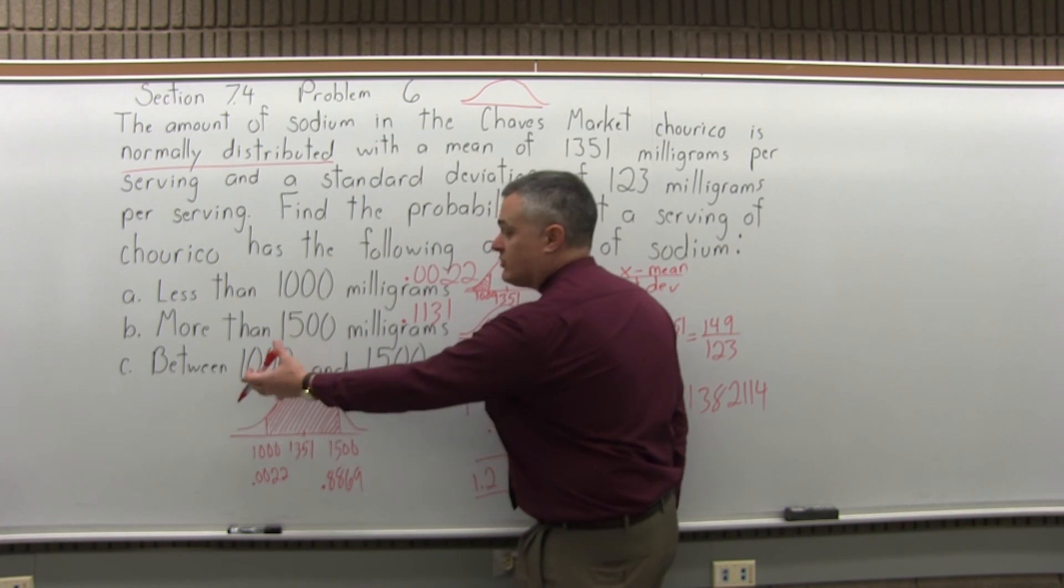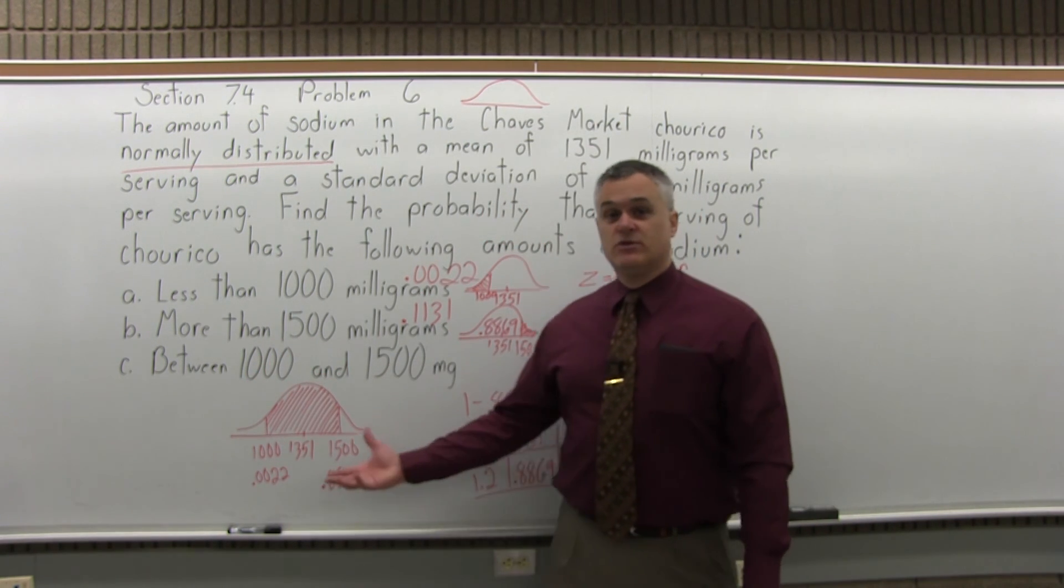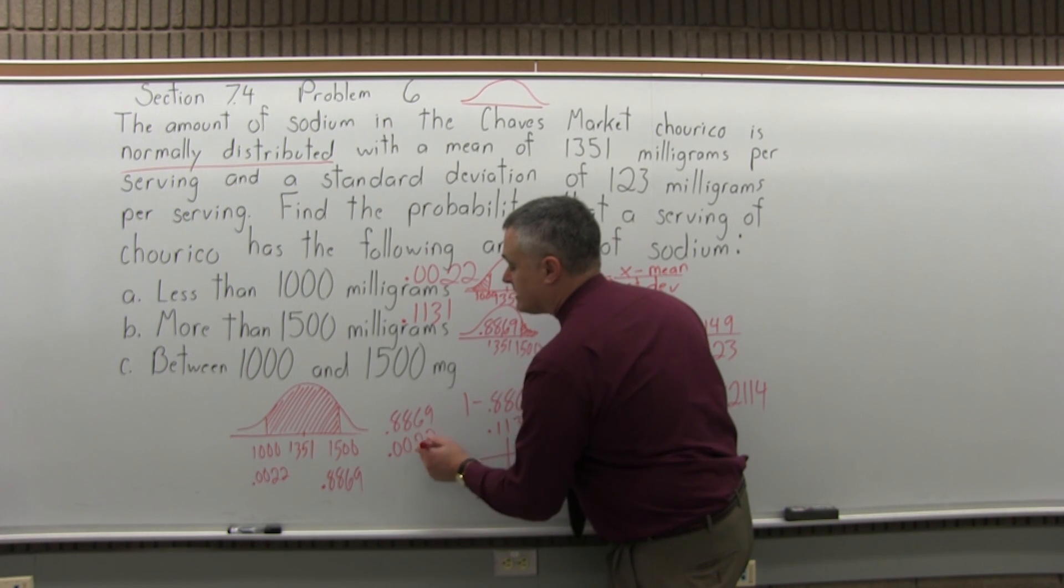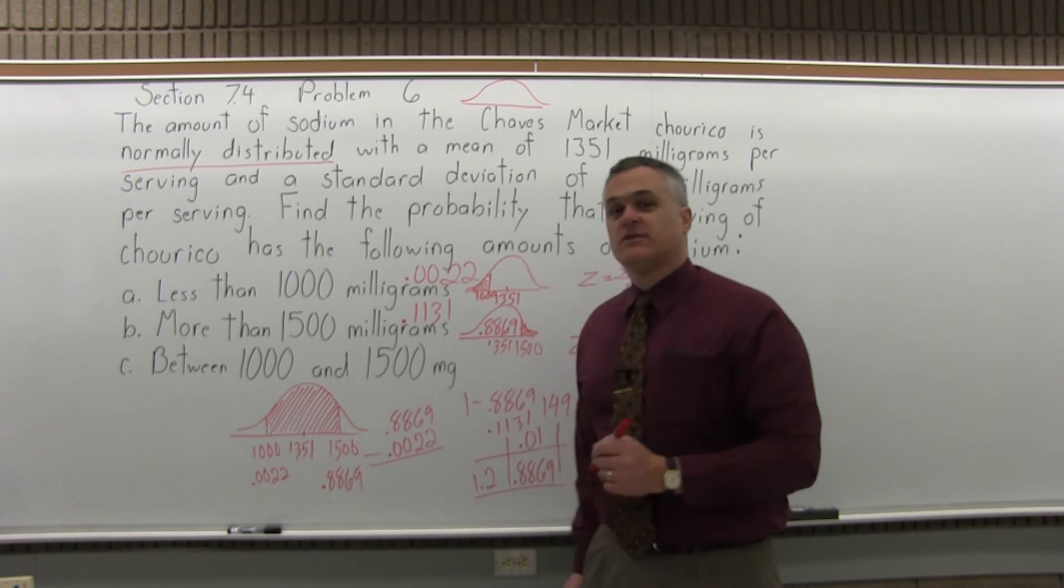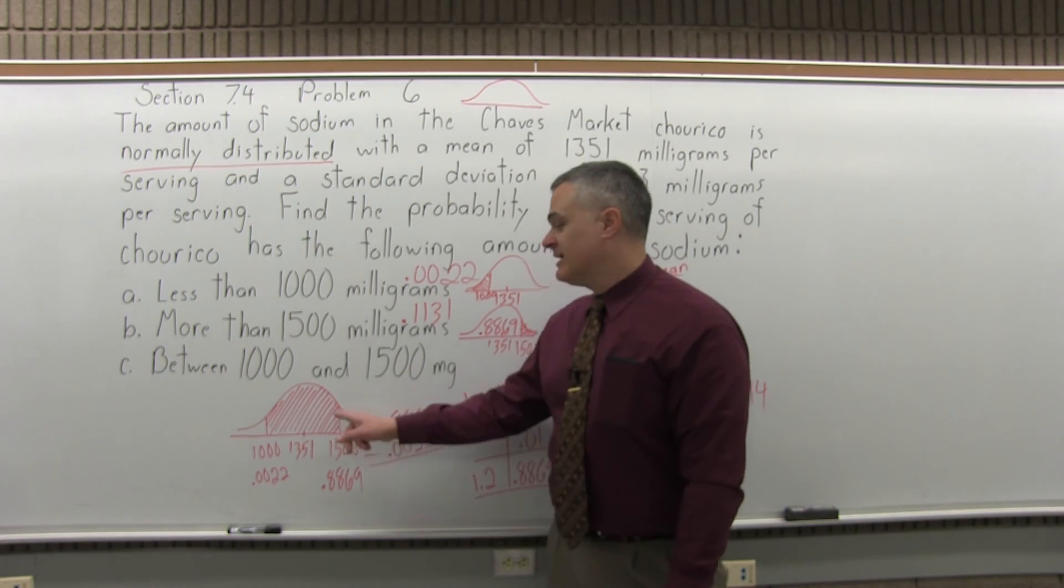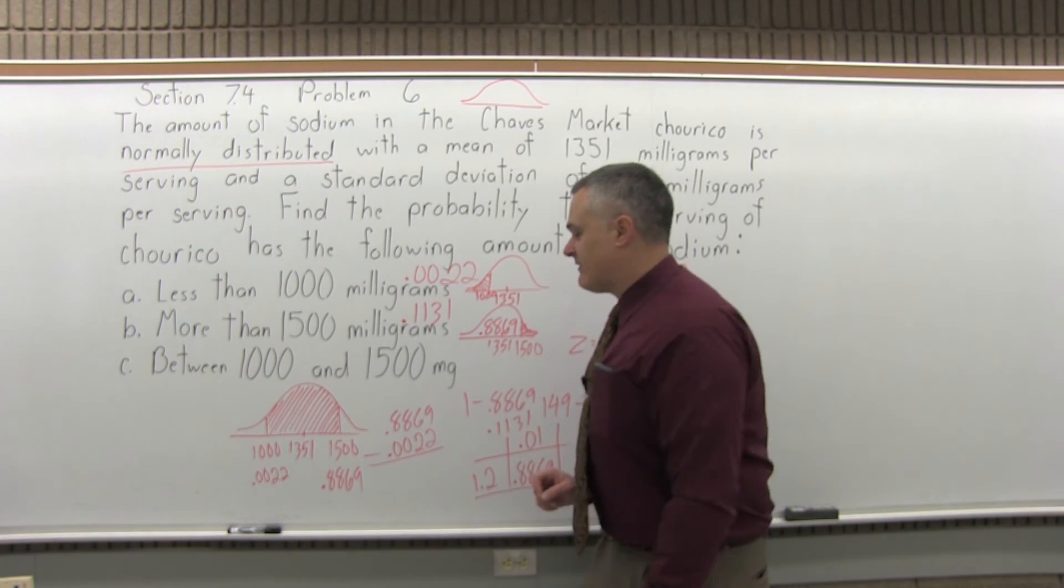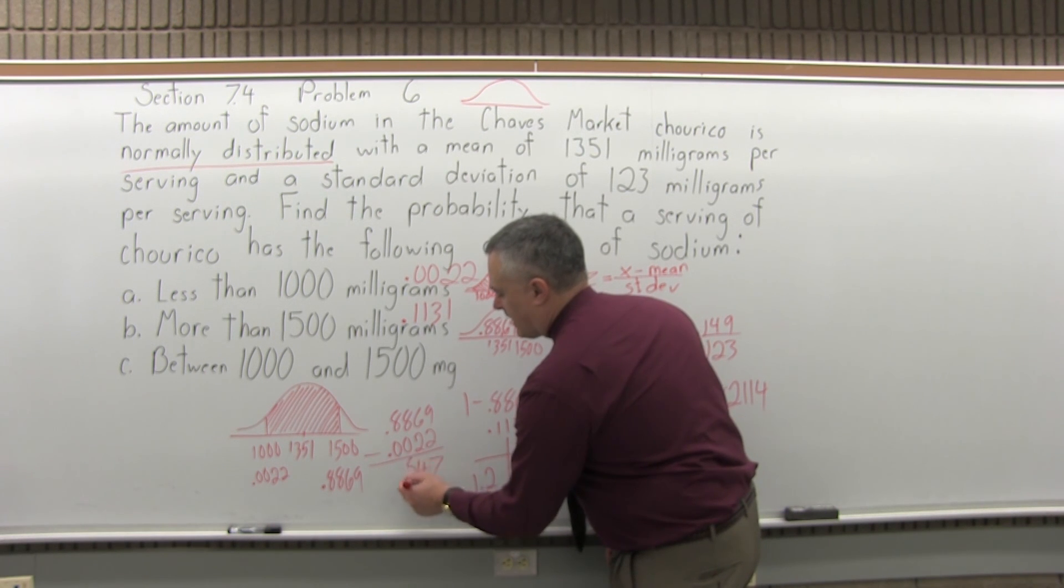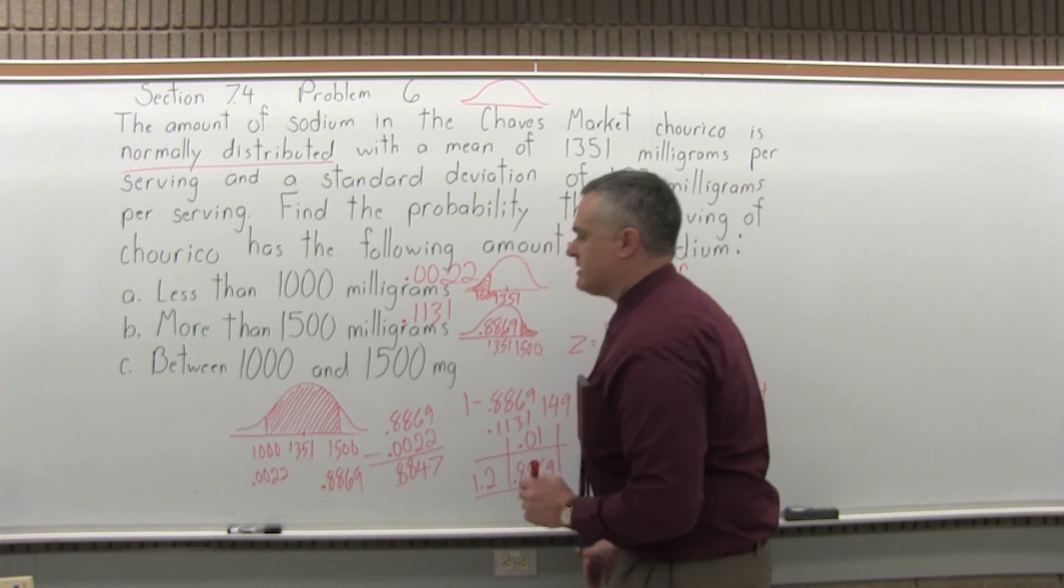And for any in-between problem like this, what you do is get your two chart values and subtract the two. So I will do .8869 minus .0022. You want to subtract in an order that will give you a positive result. The result is a probability. It must be positive. You can never have negative probability. So that'll be .8847 when I subtract.